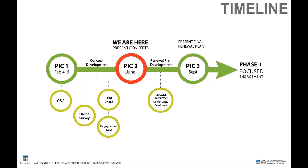That brings us to today. We took that feedback, prepared two concepts that we will present in a little while, and that brings us to tonight. We're going to present these concepts and then open a round of engagement again. After tonight, I ask you to go visit Engage Hamilton on the HAAA project. We'll provide an opportunity to provide comments on the sketches and the concepts we're going to present, collect that information, and prepare the preferred concept to present in September. At that point, we will also start what we'll deem as focused engagement for phase one works. We don't necessarily know what phase one will entail until we know what the renewal plan looks like.